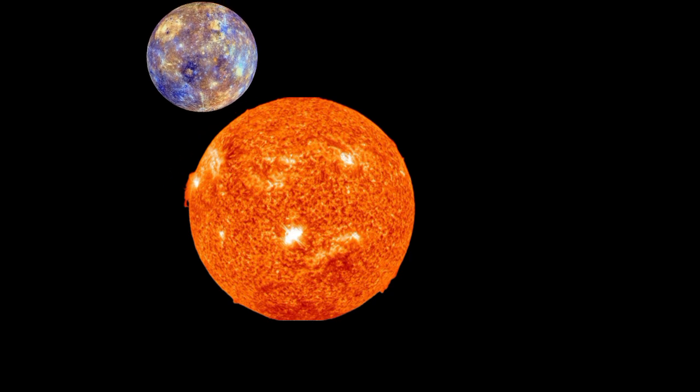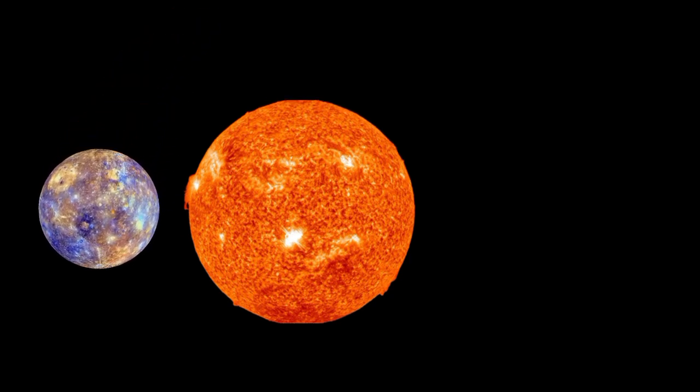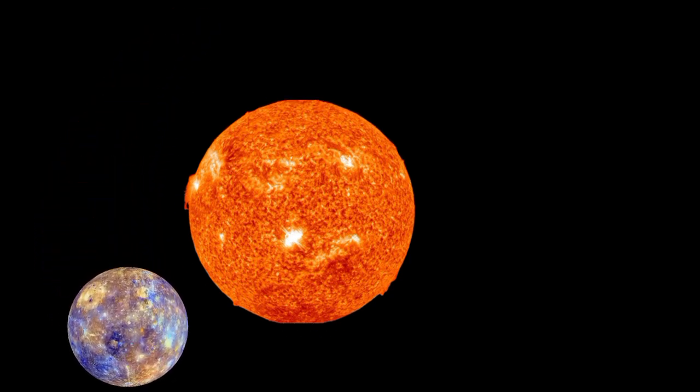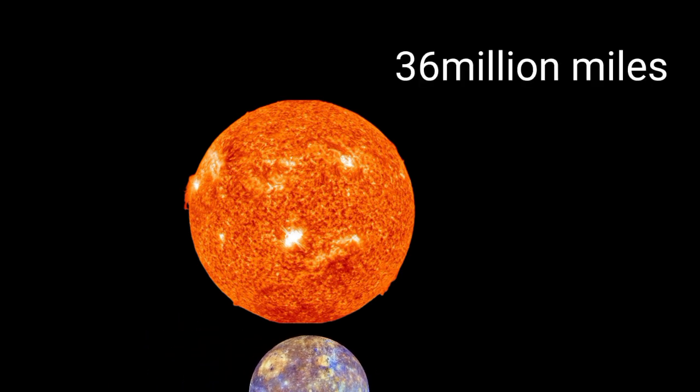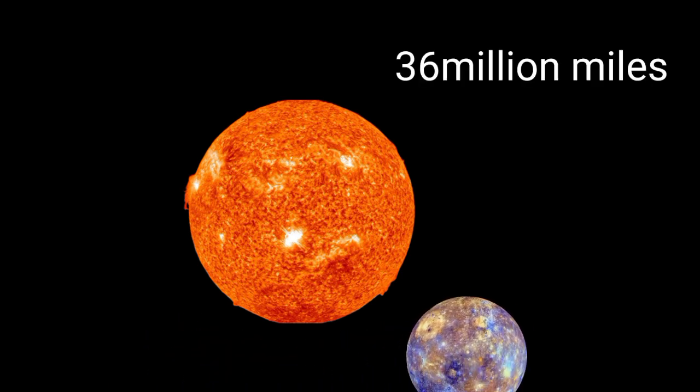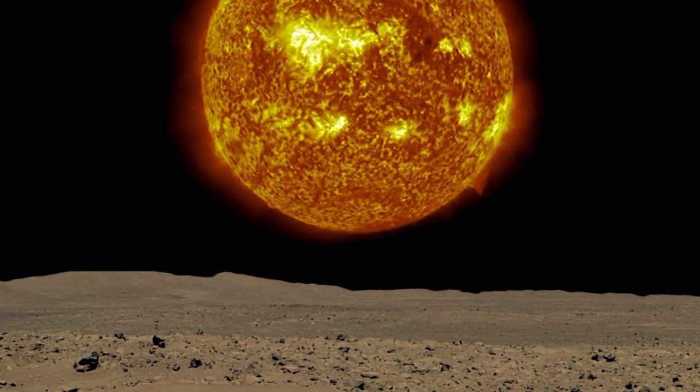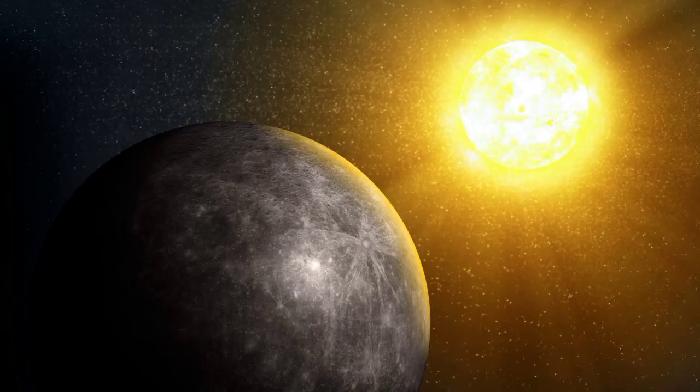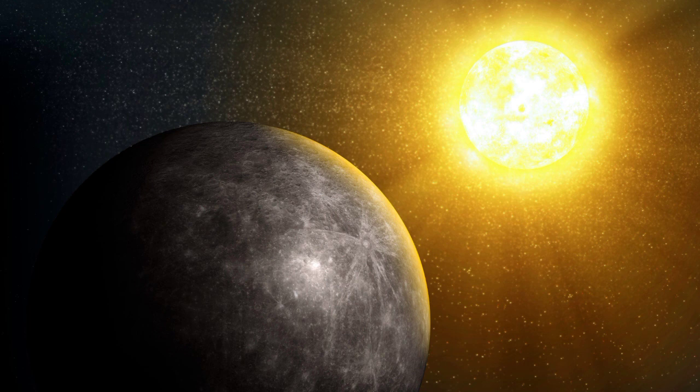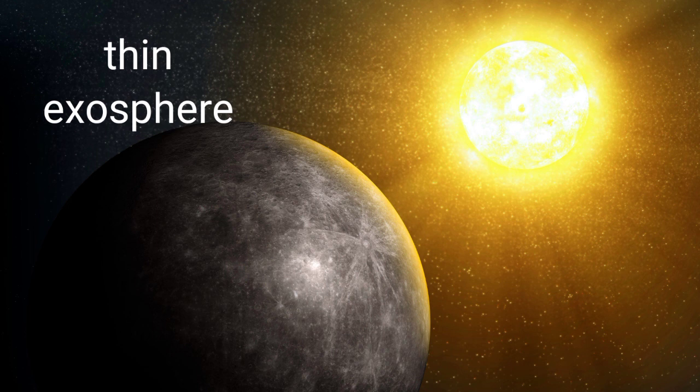This shrinking planet is also the planet closest to the Sun, orbiting our solar system's star at an average distance of roughly 36 million miles. Such proximity affects Mercury's atmosphere, or rather the lack of one. It only has a very thin exosphere, which is traditionally the outermost layer of a planet's atmosphere.